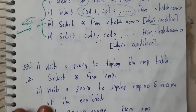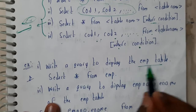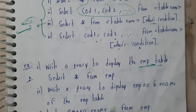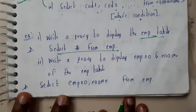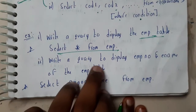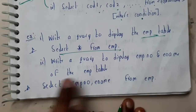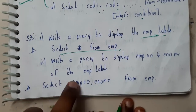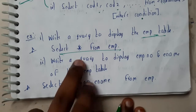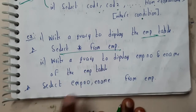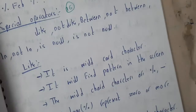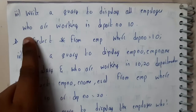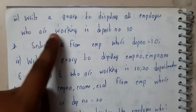Now let us take some examples. First: write a query to display the employee table — SELECT * FROM emp. Second: write a query to display employee number and employee name from the employee table — SELECT employee_number, employee_name FROM emp.